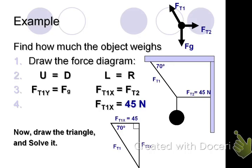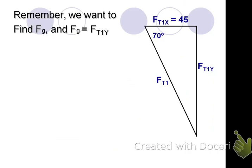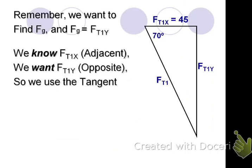What side of the triangle is FT1y? Opposite. What involves the adjacent and the opposite? That's going to be the tangent. So we know the adjacent. We want the opposite. We use the tangent. So the tangent of 70 equals the opposite over the adjacent. So tangent of 70 degrees equals FT1y over 45.